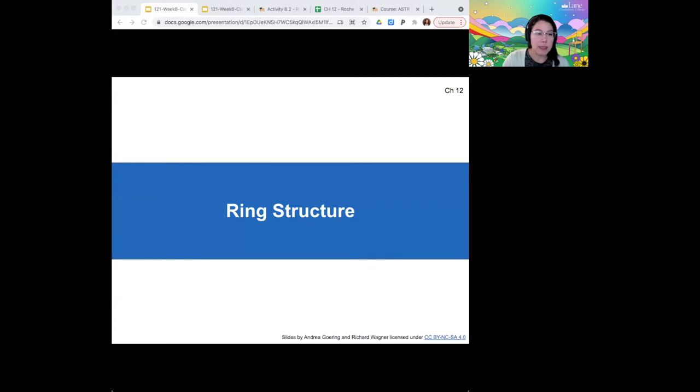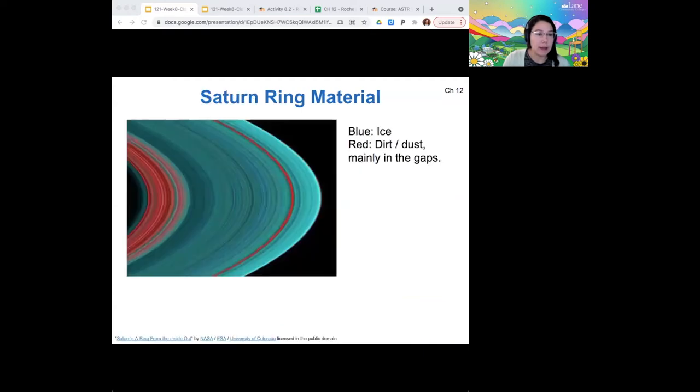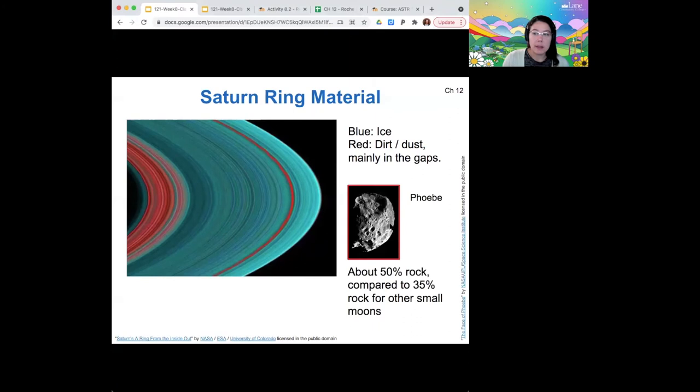Because those are a collection of small pieces, then it is true that their interactions lead to specific structures in the ring. Most of the material is made of ice, but there are also rocky chunks. When we look at Saturn's ring materials, we can take a photo and then color code by what type of composition it is. The blue shaded regions on this image are icy materials, whereas the red is more rocky material, and the rocky material is present mainly in the gaps between rings. There are many moons of Saturn. Some of them are icy, but some of them are quite rocky. For example, Phoebe is a very rocky moon, about 50% rock compared to only 35% for the other small moons, and Phoebe lives in a gap.